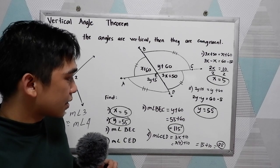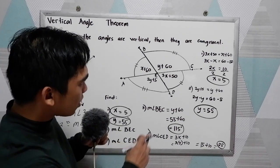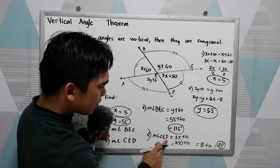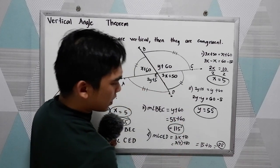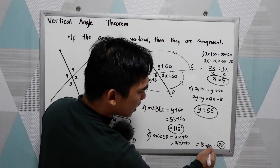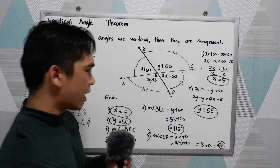Measure angle CED is, oh, I'm sorry, CED is 3x plus 50. This is 50, not 10. So, 15 plus 50, that is 65.